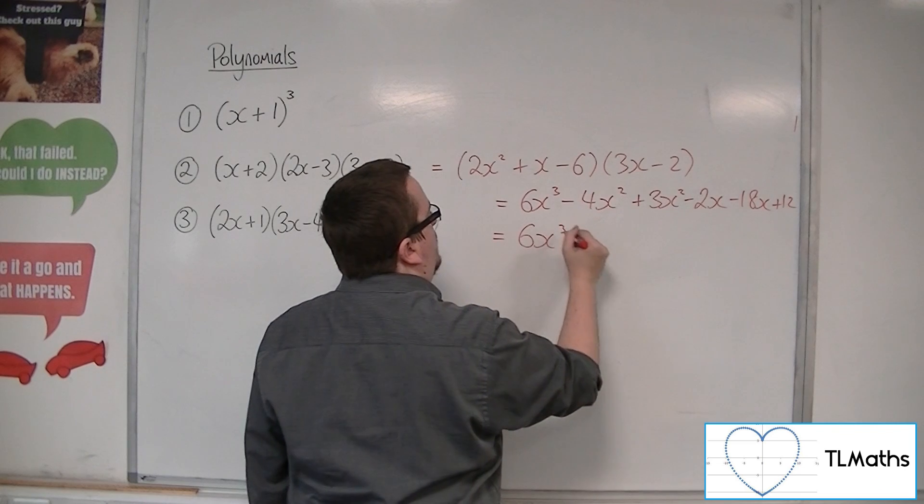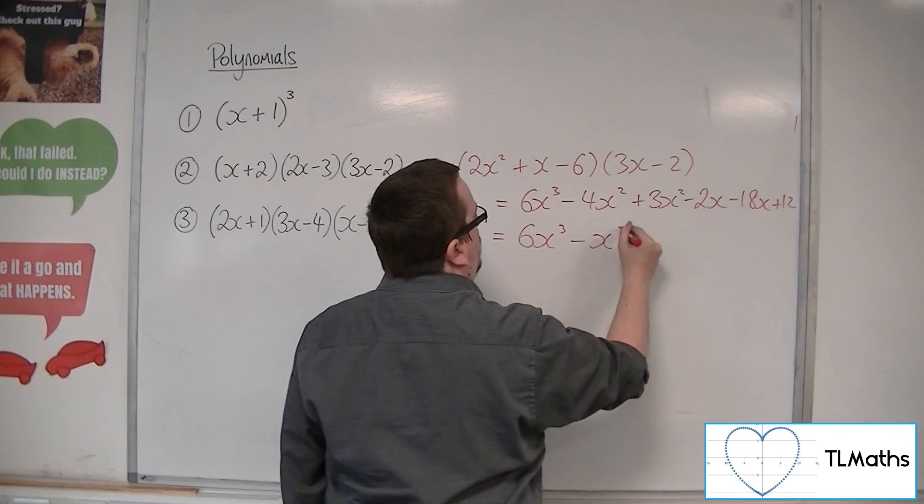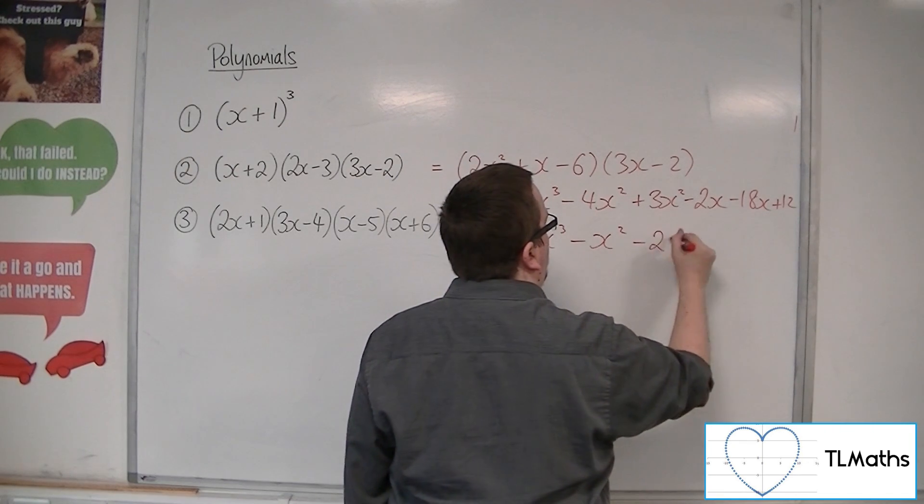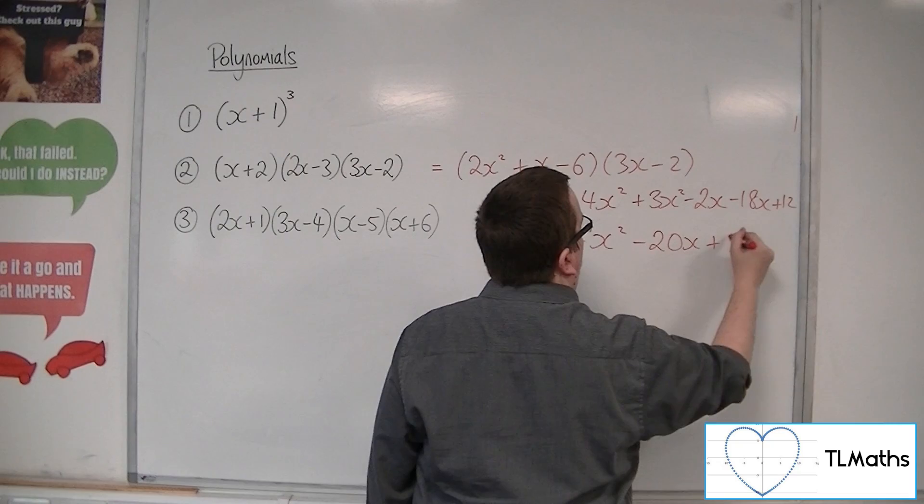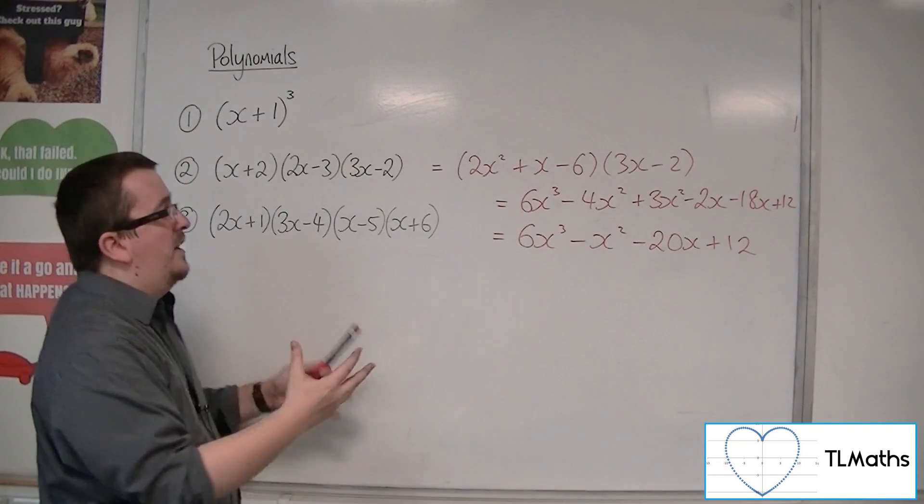So we have 6x³, -4x² plus 3x² makes -x², -2x take away 18x is -20x, and +12 on the end. So that's the second one expanded.